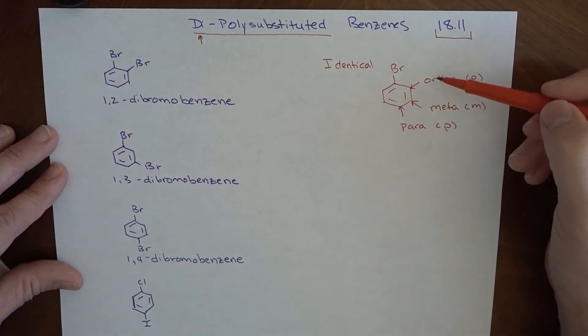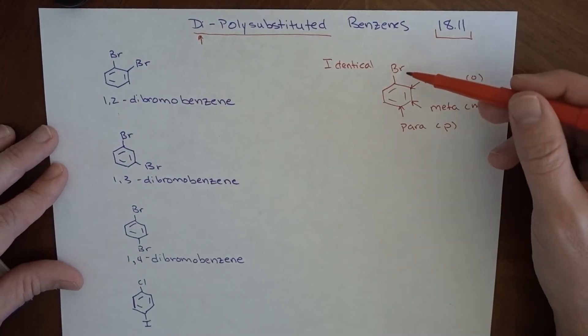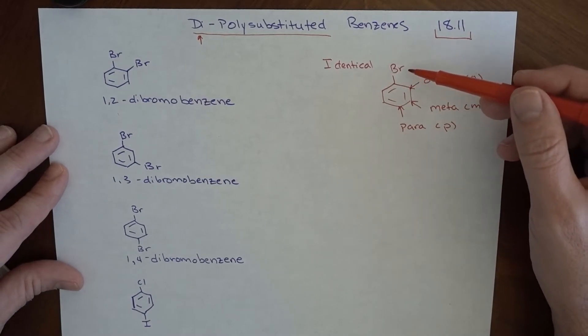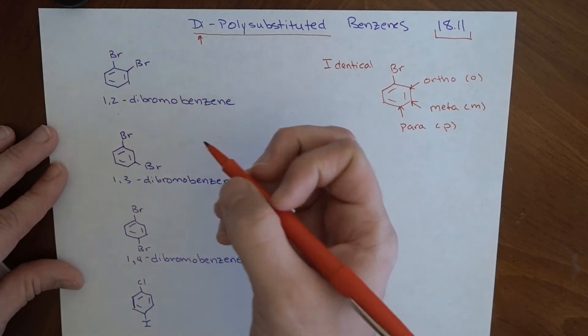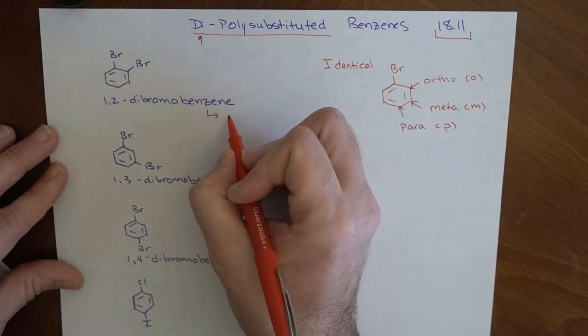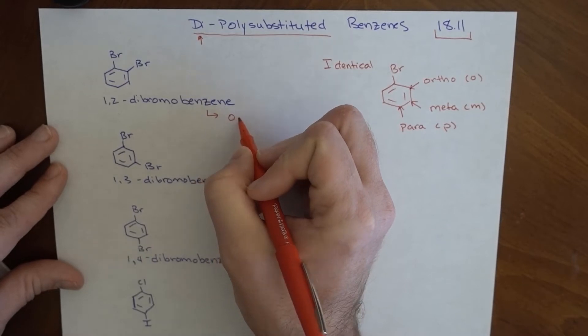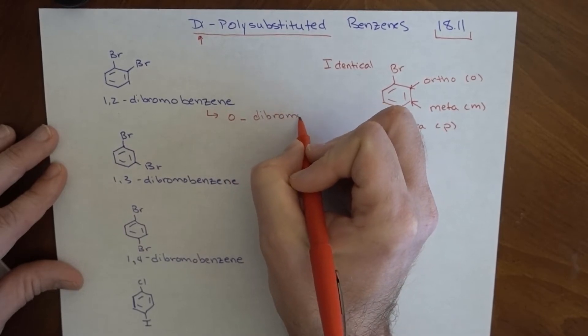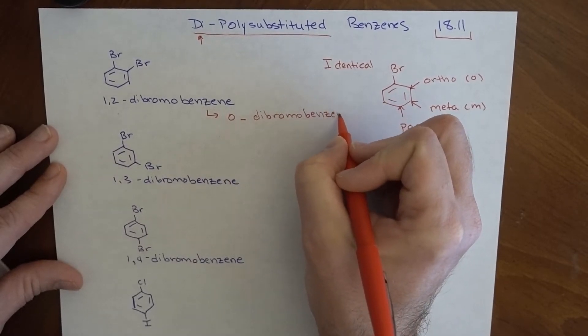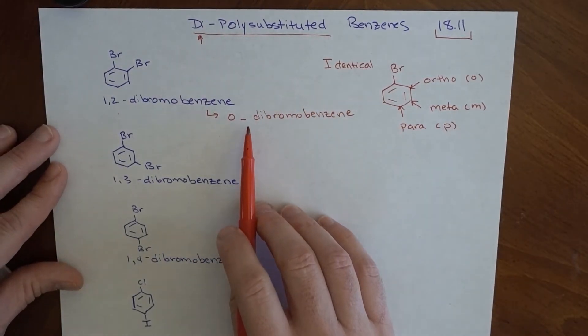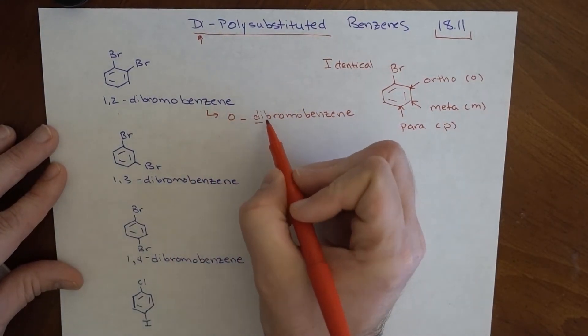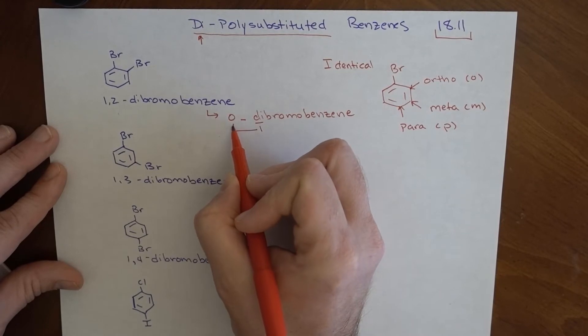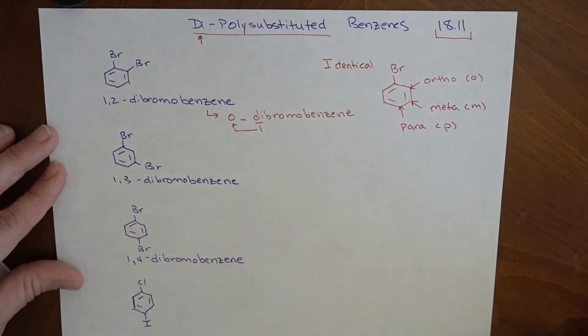I can say that something is ortho to this bromobenzene, or meta to this bromobenzene, which is the same as saying 3, and something is para to this bromo on the benzene, which is the same as saying 4. So instead of saying 1,2-dibromobenzene, I can say ortho-dibromobenzene. What that does is that says I've got a benzene that's got two bromines on it, and one is going to be in the one position, obviously, and the other one is going to be in the ortho position. This gives a lot of information in just a simple name.